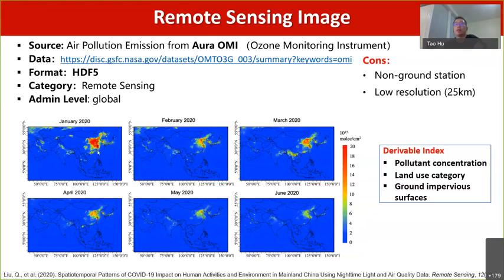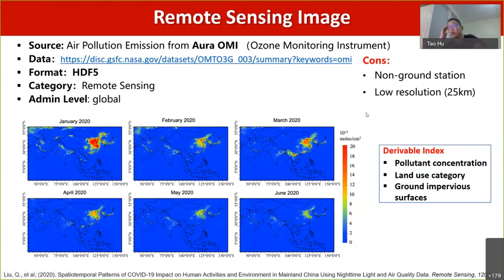This is the detection of NO2 concentration. You can see here from January until June, the concentration is getting lower and lower. Based on remote sensing images, we can estimate pollutant concentrations, land-use categories, and ground surface characteristics.